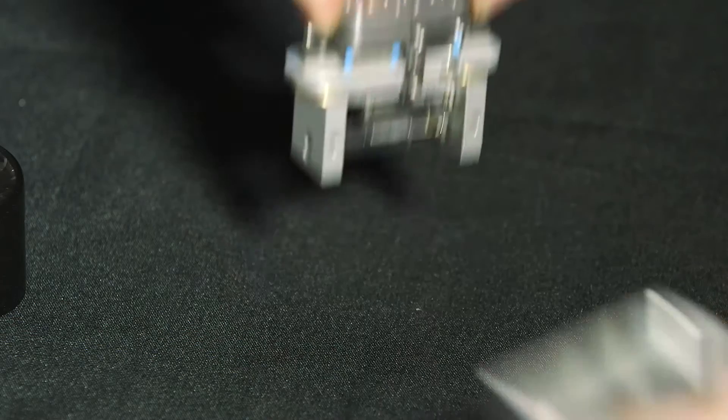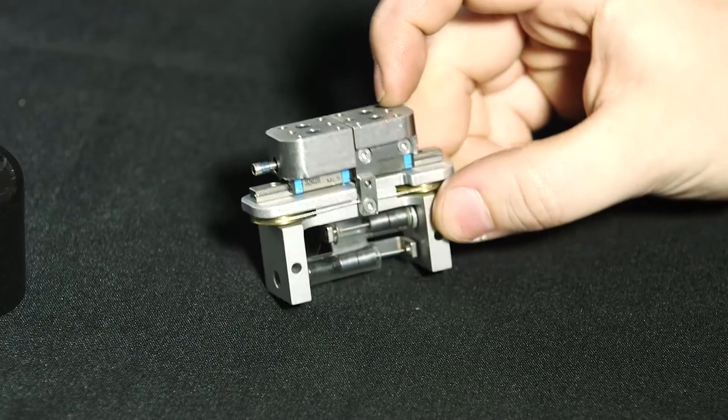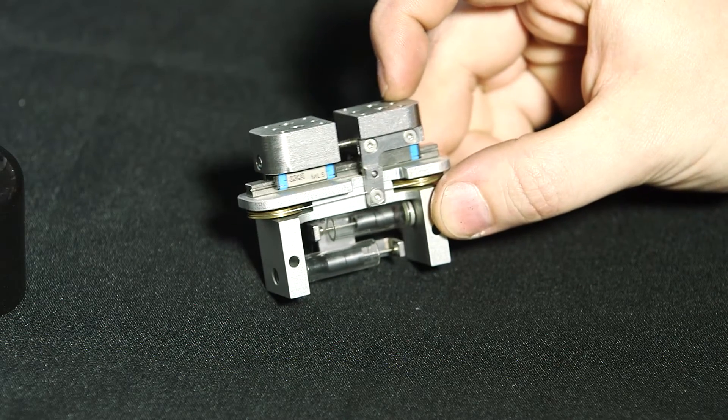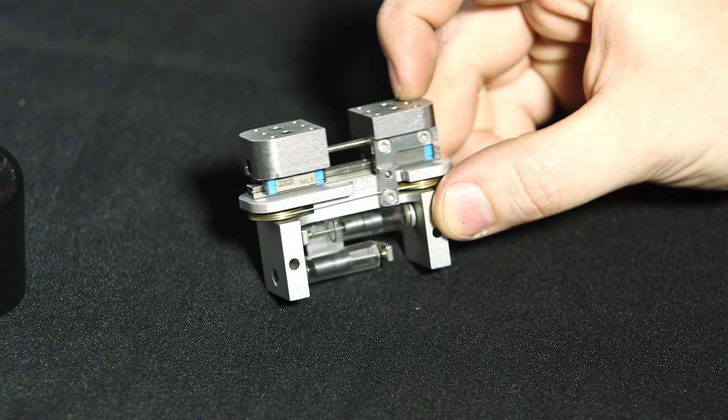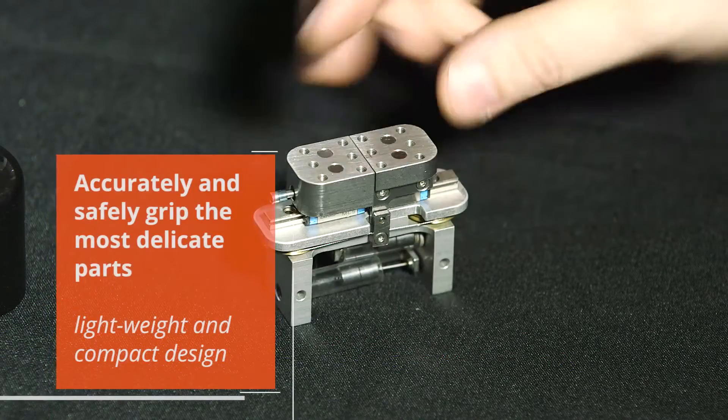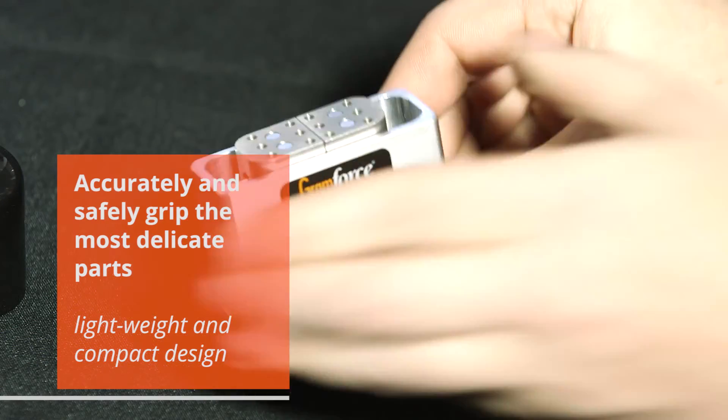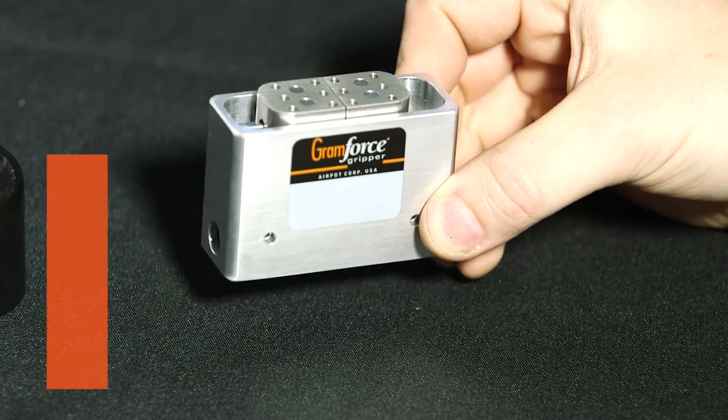The gripper's holding elements are moved synchronously and in parallel by two 5.6 millimeter bore AirPod pneumatic actuators and supported by these ball bearing guided carriage blocks. You can see that the Gram Force Gripper is quite compact and it weighs only 205 grams.